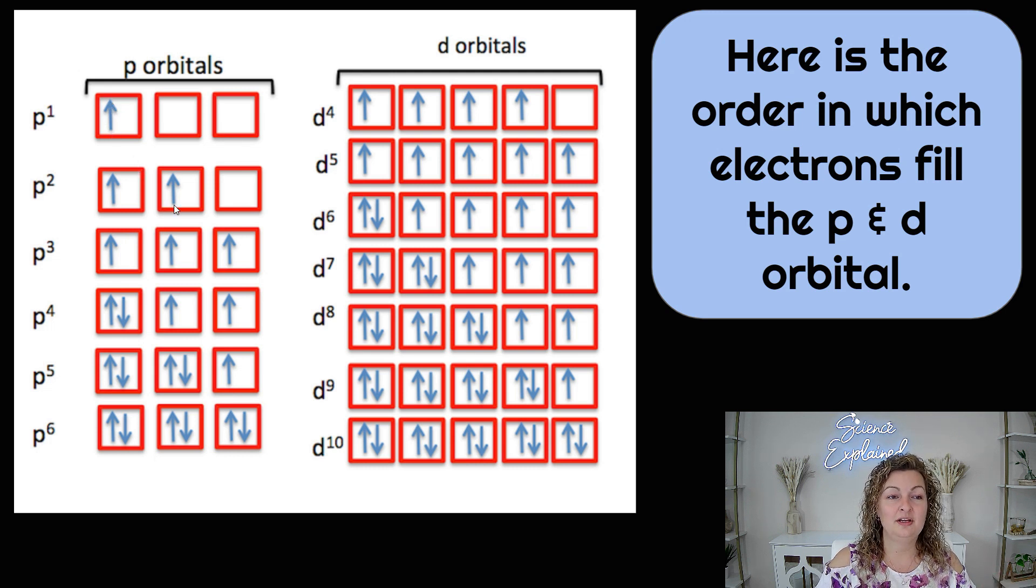And then the third one is going to be upward in the third box. So every box must be filled with one arrow or one electron first and going in the same direction. This happens to be up. You can start going down as well. It doesn't make any difference, but they have to be going in the same direction first.